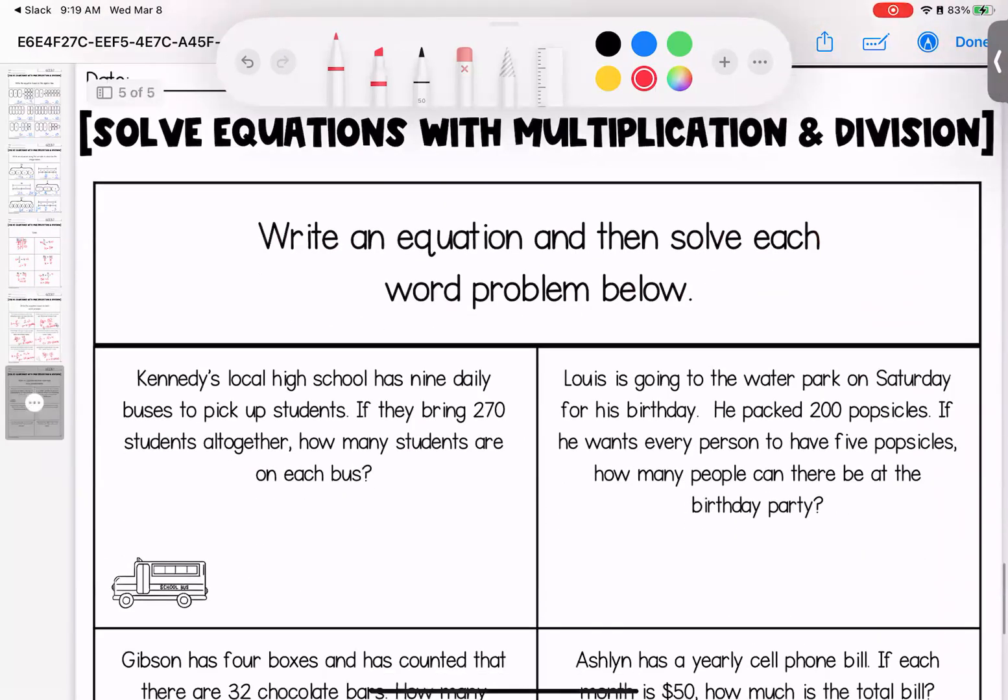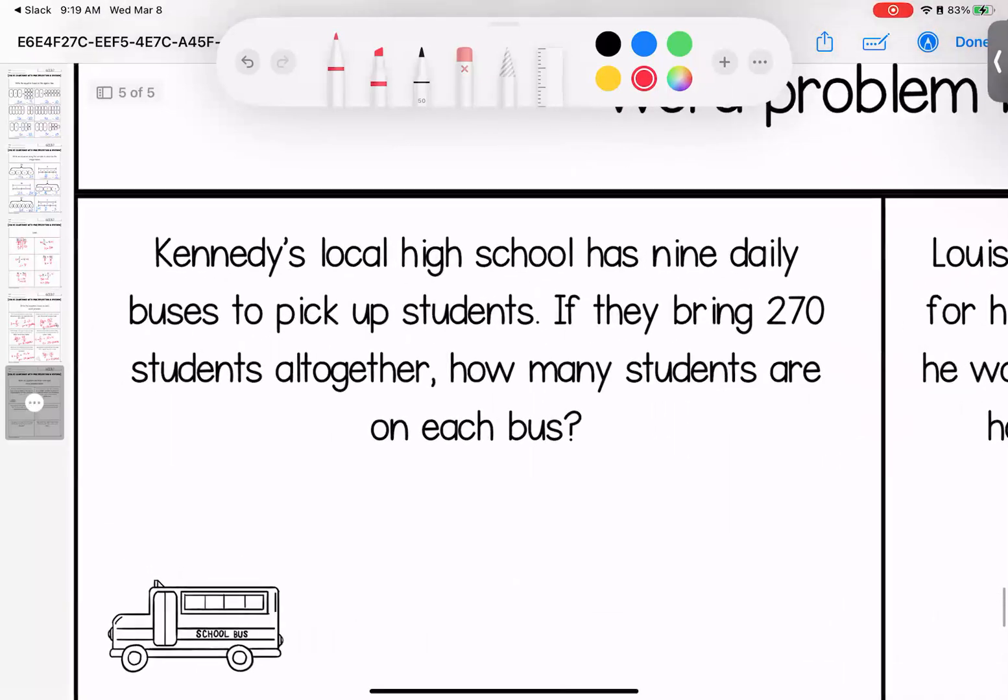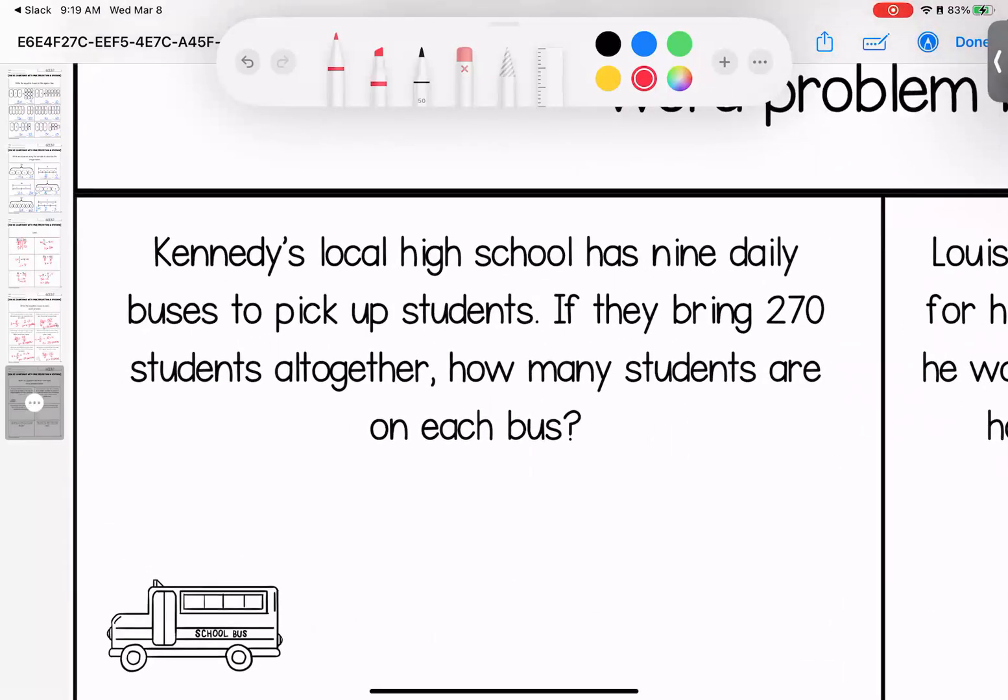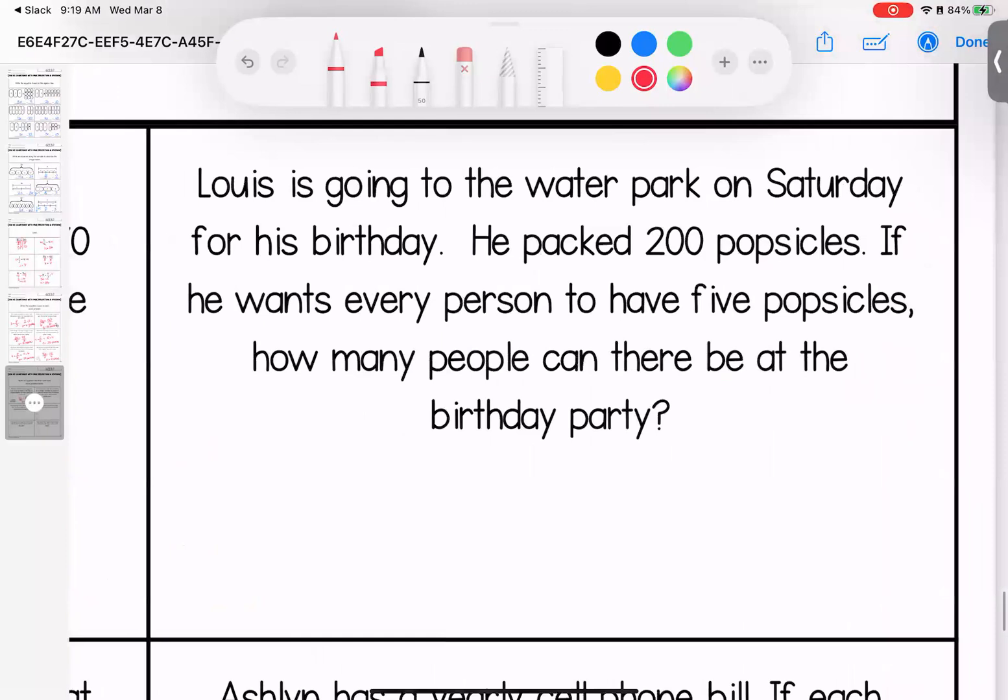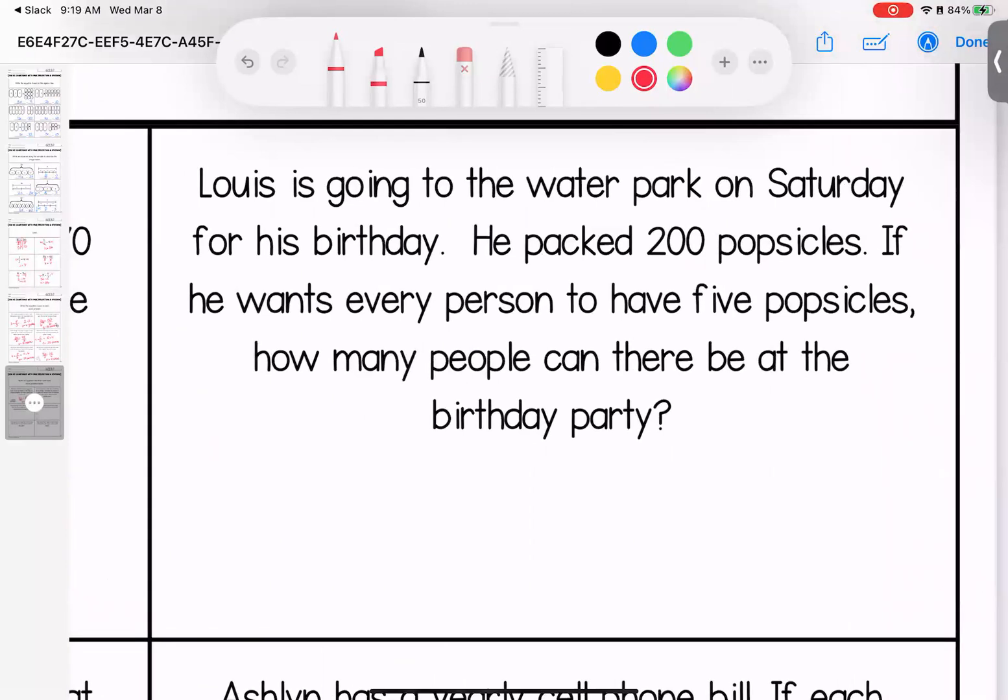Last page again. Write the equation and solve. Kennedy's local high school has nine daily buses to pick up students. If they bring 270 students all together, how many students are on each bus? So those nine buses pick up some students and all together, they have to transfer 270. But how many students are on each bus? Sticky numbers, I divide. Every bus has 30 students.